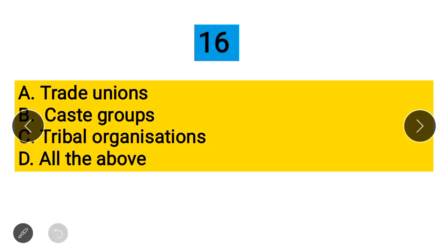Question 16: Which of the following are known as pressure groups? Option A: Trade Unions, Option B: Caste Groups, Option C: Tribal Organizations, Option D: All of the Above. The correct answer is All of the Above — all of these are pressure groups.